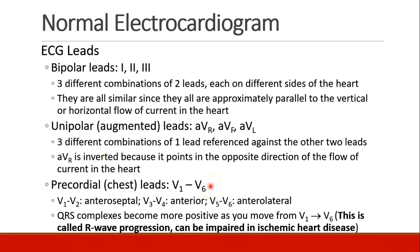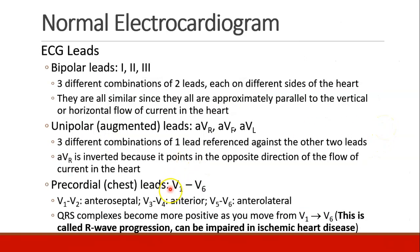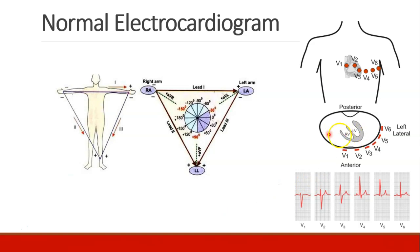We also have the precordial or chest leads, called V1 through V6. You can see how they're placed on the chest, and looking at a transverse section, conduction moves such that V1 is more anterior and septal, V3 and V4 are more anterior, and V5 and V6 are more lateral. The QRS complexes become more positive as you move from V1 to V6, because that's the direction of current moving — we call this R-wave progression. Starting negative in V1, the complexes become more and more positive through V6.